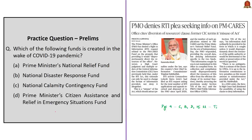The next question is: which one of the following funds is created in the wake of the COVID-19 pandemic? The correct answer is option D — Prime Minister's Citizen Assistance and Relief in Emergency Situations Fund, also known as PM CARES Fund. This question has been framed based on this news article.